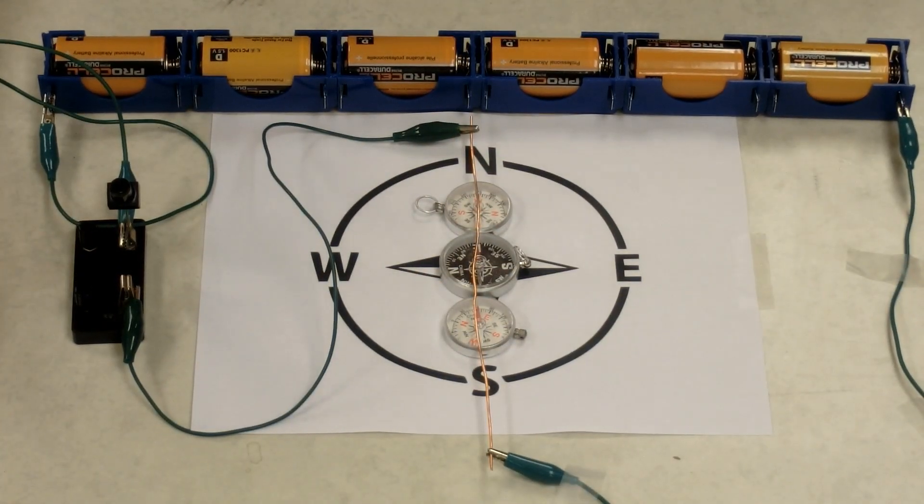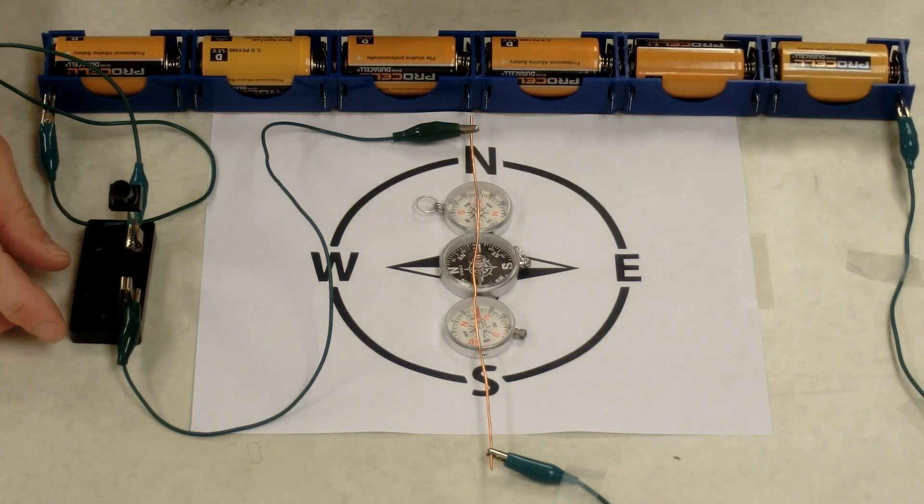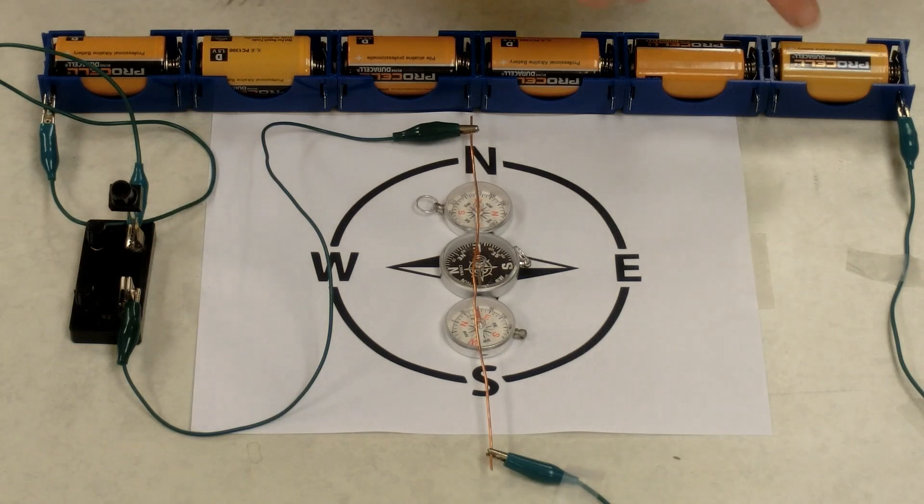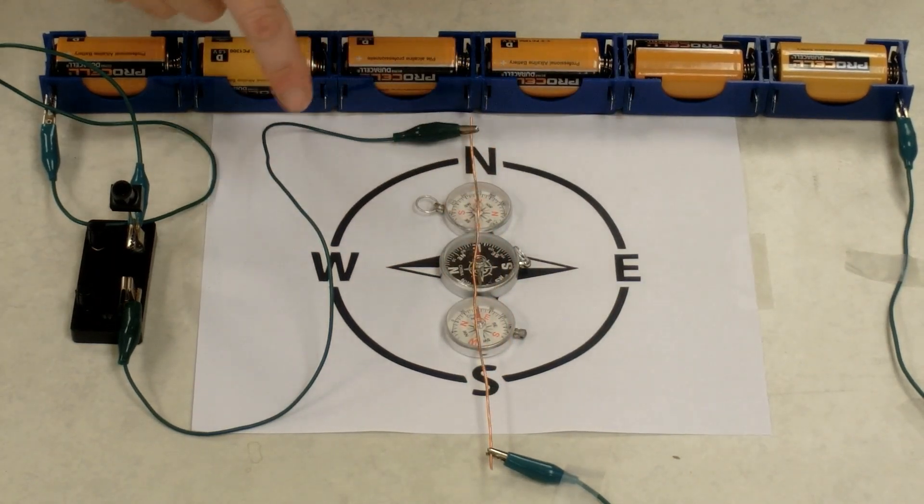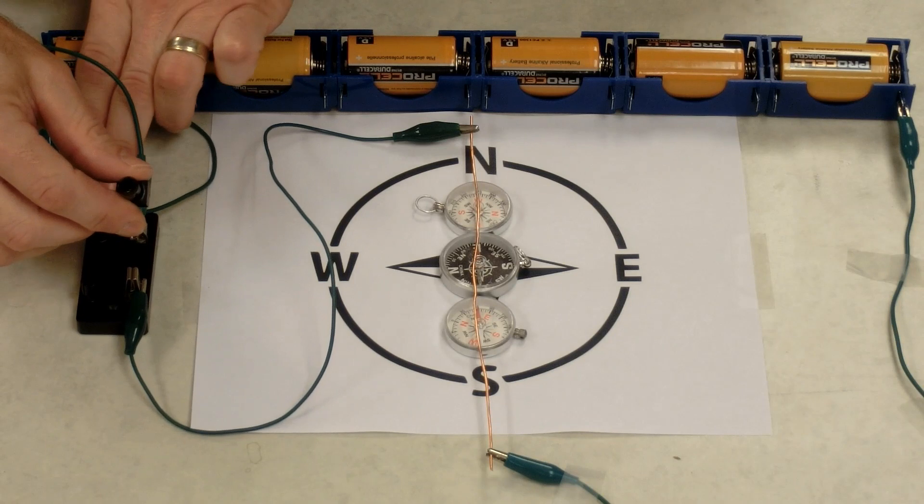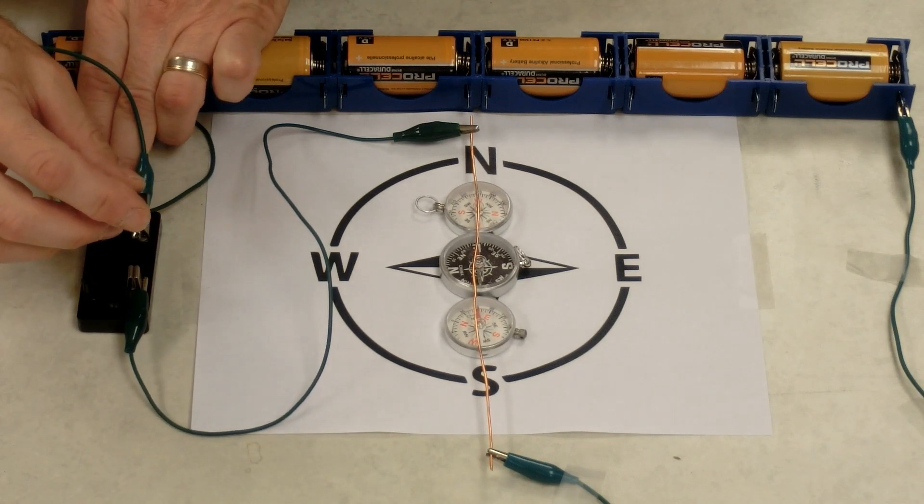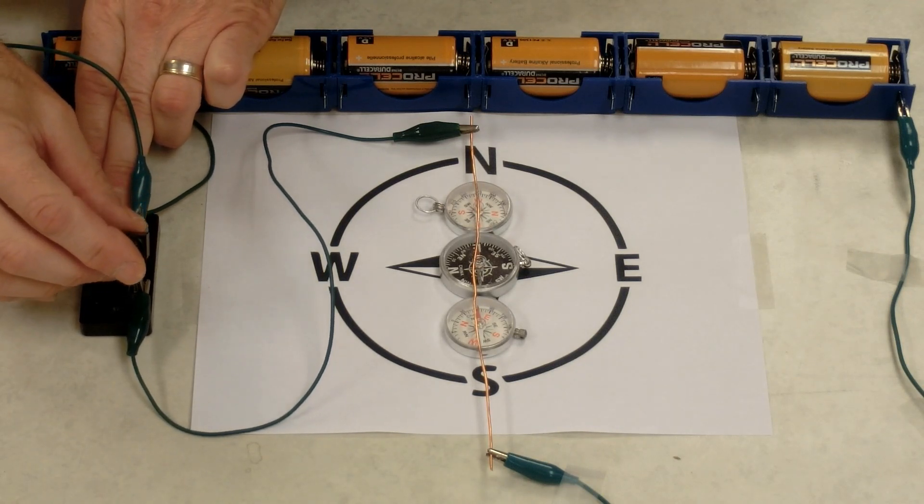So now the compass needles are all facing north. The wire above them runs north-south. When I close the switch, I'm going to create current that goes through this copper wire and through our complete circuit. Notice what happens to the needle when the switch is closed.